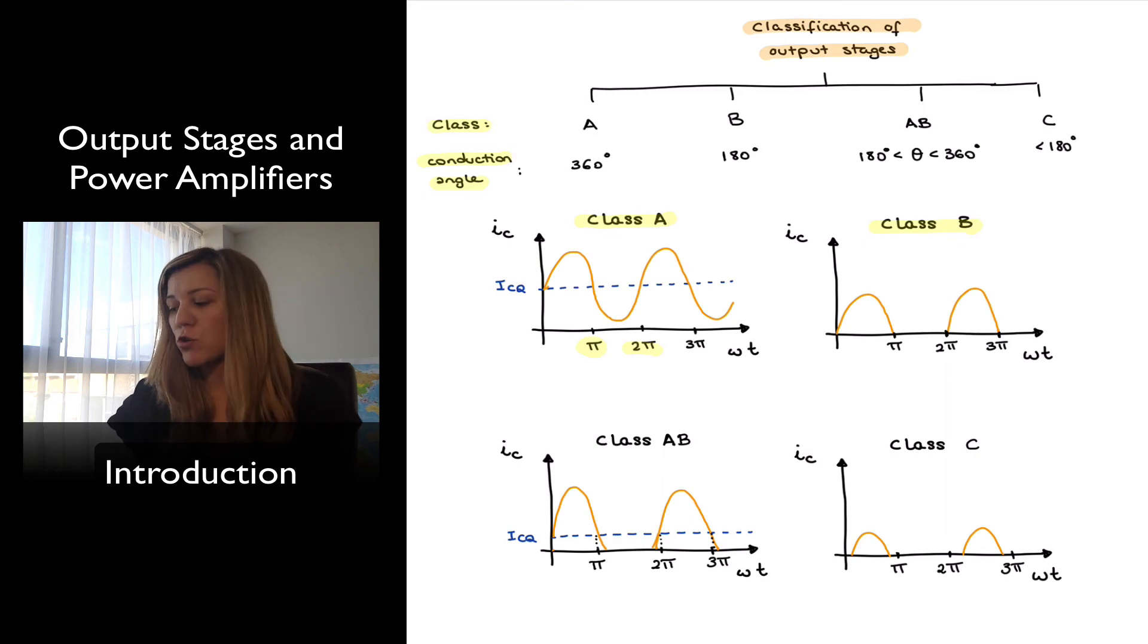We talked about not just power efficiency for output stages but also the importance of linearity or total harmonic distortion and so a compromise between the power efficiency and the linearity issue is the Class AB amplifier which as we can see in the graph it's conducting for a little over half a period and so we say the conduction angle is greater than 180 degrees but less than 360 degrees, less than the Class A amplifier.